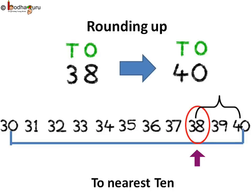So 38 is rounded up to 40. Hence, we increased 10's place by 1 and the 1's place is set to 0.